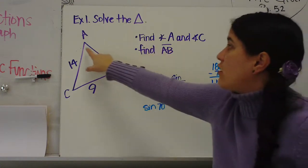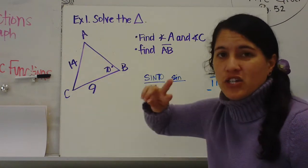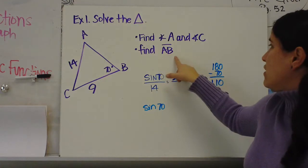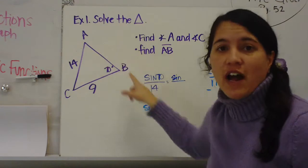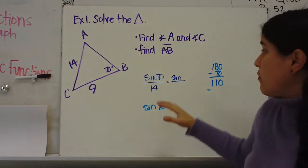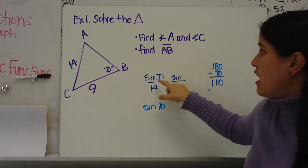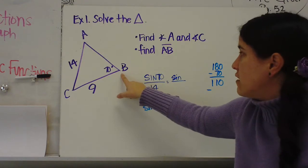To solve, we need to find angle A and angle C. We're missing two angles, and then we need to find side AB. Because we have these two sides, we need to find that side. So I'm going to set up a proportion: sine of 70 over 14, so sine of B over b.